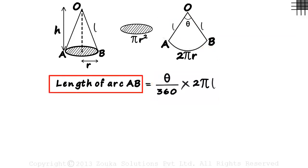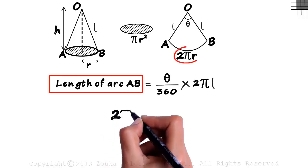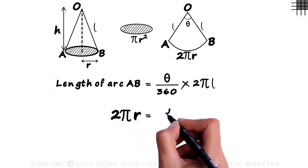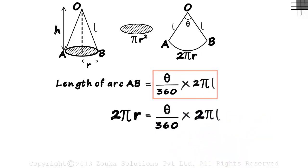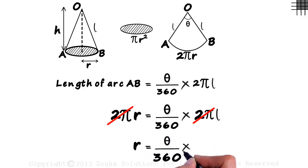But the length of arc AB is also 2 pi R. That will equal theta by 360 multiplied by 2 pi L. Cancelling 2 pi out from both sides, we get R equal to theta by 360 multiplied by L.